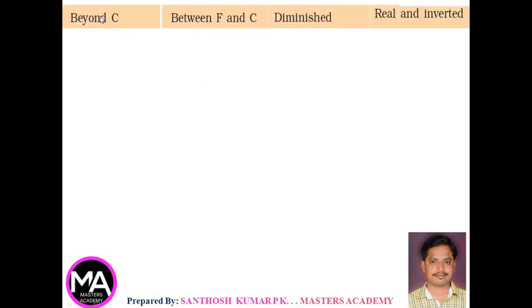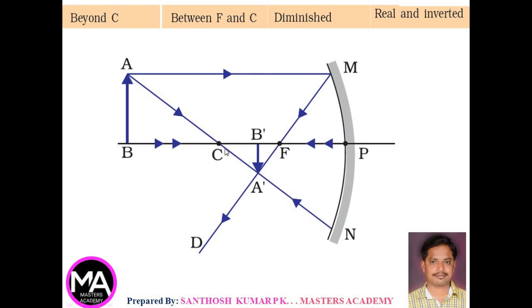Second case: when the object is kept beyond C, that is, beyond the center of curvature. The object AB is kept beyond C. Consider two rays: the first ray is parallel to the principal axis, and another ray is passing through the center of curvature. The ray parallel to the principal axis, after reflection, passes through the principal focus. The ray passing through the center of curvature, after reflection, retraces the path. The two reflected rays meet, and the image is formed between F and C. It is diminished and real and inverted.